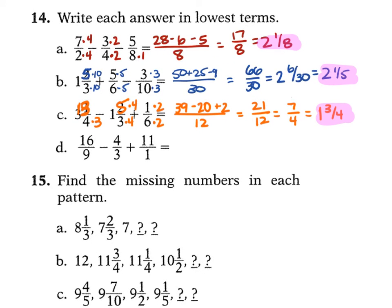For D, 16 over 9 minus 4 thirds plus 11: LCD is 9. The 4 over 3 becomes 12 over 9, and 11 becomes 99 over 9. So 16 minus 12 plus 99 equals 103 over 9. Dividing, 9 goes into 103 eleven times with 4 left over — answer is 11 and 4 ninths.